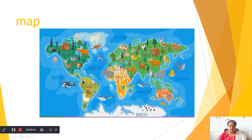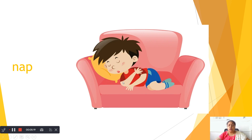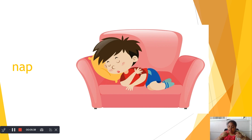Let us go to the next one now. What is the boy doing? He is so tired. Then what did he do? He just got a pillow and took a small nap of 20 minutes or 30 minutes on the sofa itself. He didn't go to bed. You can take a nap on a bed also. He is taking a nap. N-A-P — NAP.